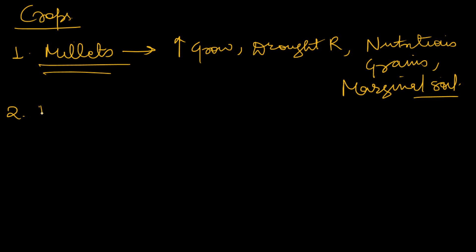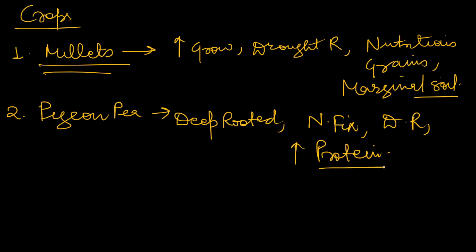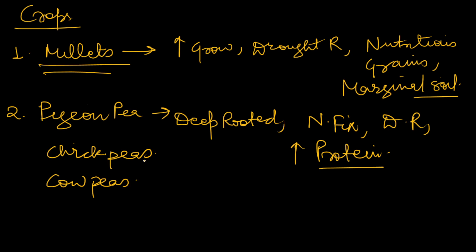Second, various kinds of pulses such as pigeon pea can be used. It is deep rooted, helps in nitrogen fixation, is drought resistant, and provides a high quantity of protein in the diet. Chickpeas can also be used. All these pulses share similar characteristics — they are deep rooted, drought resistant, fix nitrogen, and improve soil health.